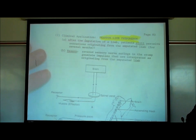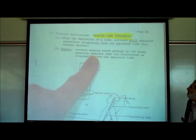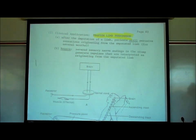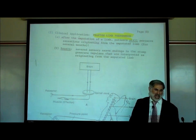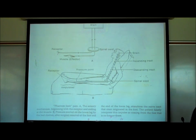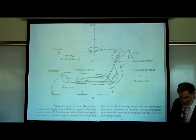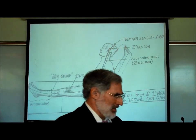What creates the phantom limb phenomenon is that there are severed sensory nerve endings in the stump that generate impulses interpreted as originating from the amputated limb. I've learned over the years that if I give you a larger picture, students understand it better, so I'm going to pass the same picture out, just bigger.